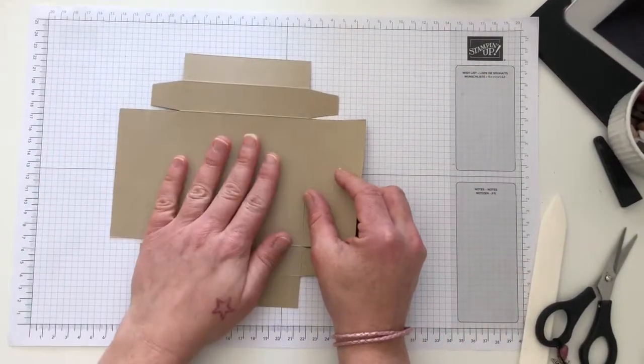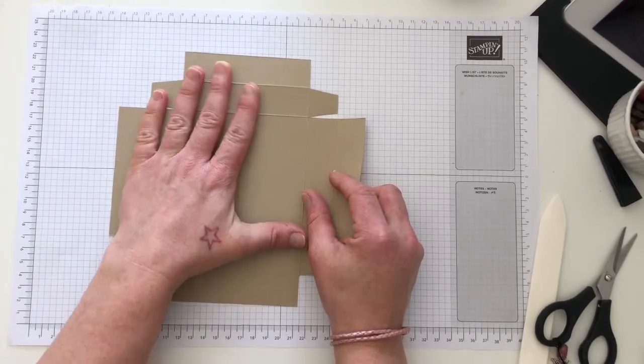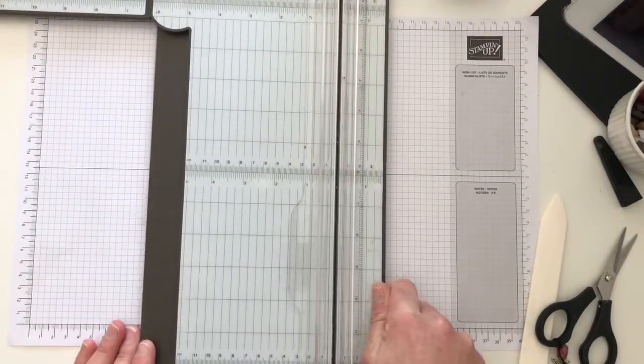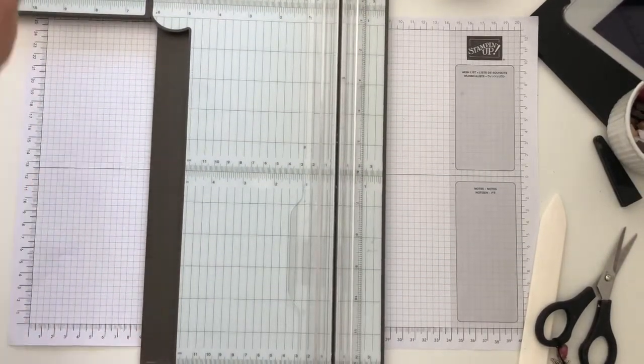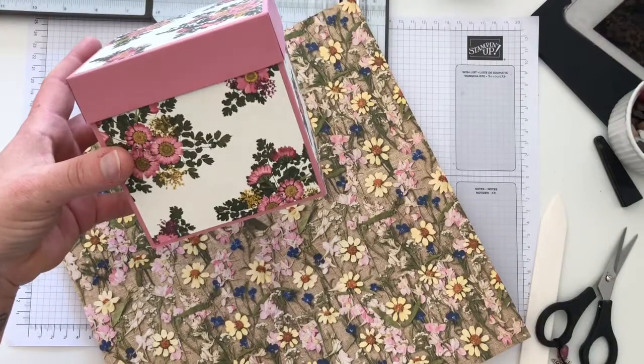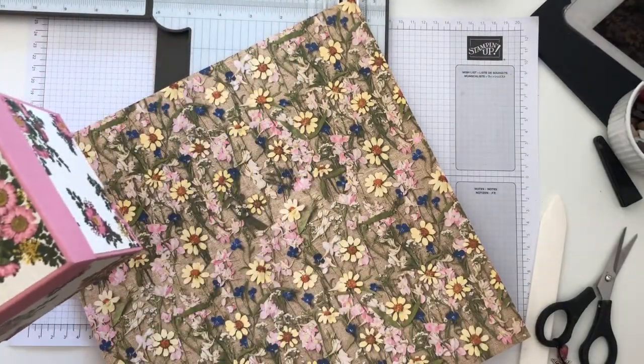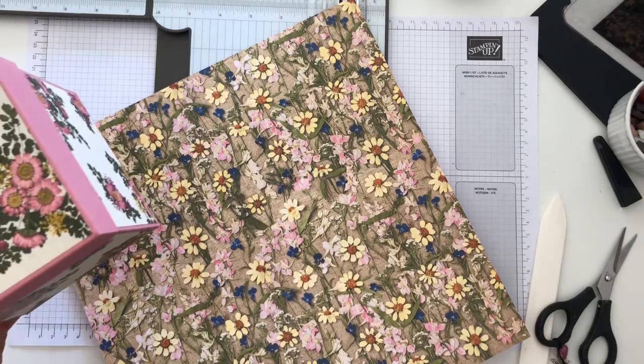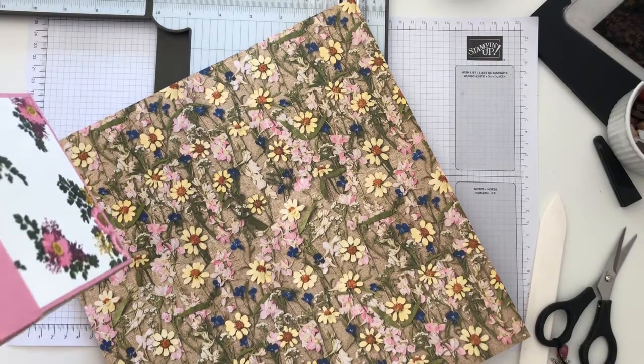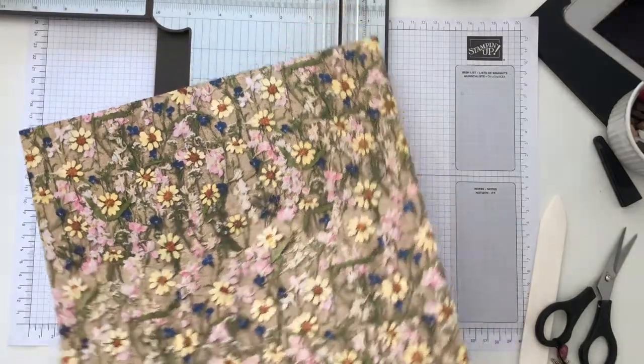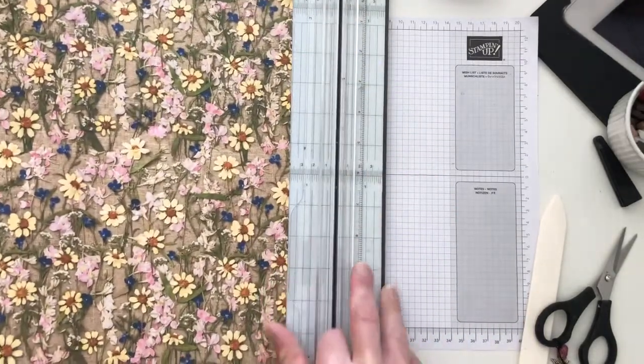Now what I'm going to do with this while it's flat, I'm going to add my DSP. The DSP I'm using for this box is the Stampin' Up Pressed Petals. It's a specialty pack, you get double the amount of DSP than what you normally do, and it's a pack of £13. They're all so, so pretty.